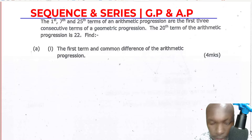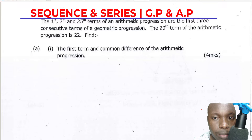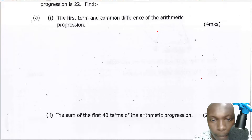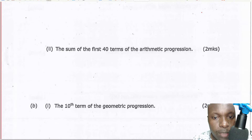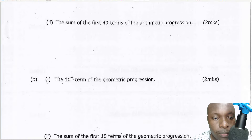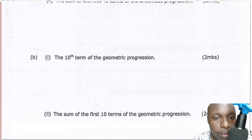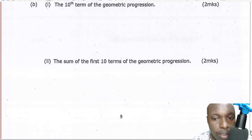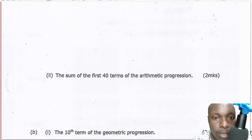Let me read through this question and then we solve it. The first, seventh, and twenty-fifth terms of an arithmetic progression are the first three consecutive terms of a geometric progression. The twentieth term of the arithmetic progression is twenty-two. Find: part A one, the first term and common difference of the AP; part A two, the sum of the first forty terms of the AP; part B one, the tenth term of the GP; and part B two, the sum of the first ten terms of the GP.